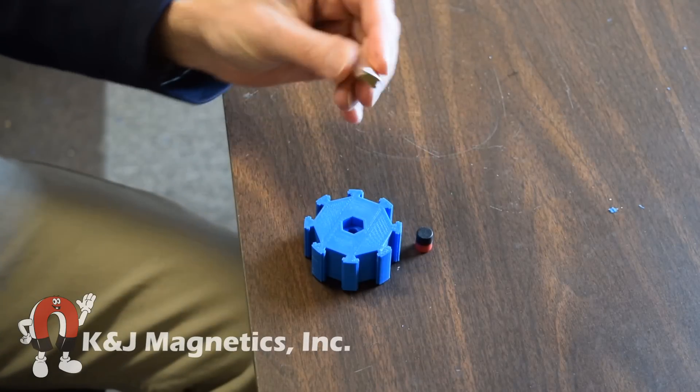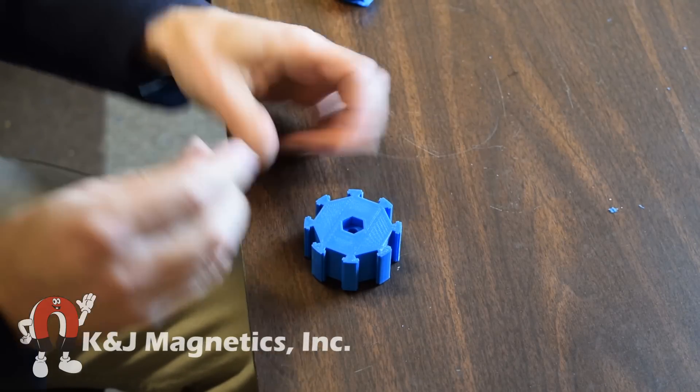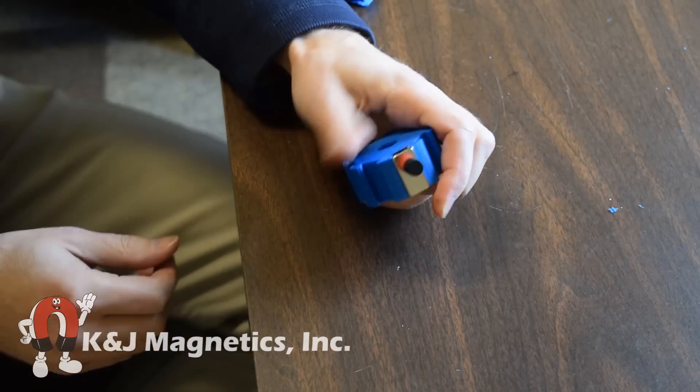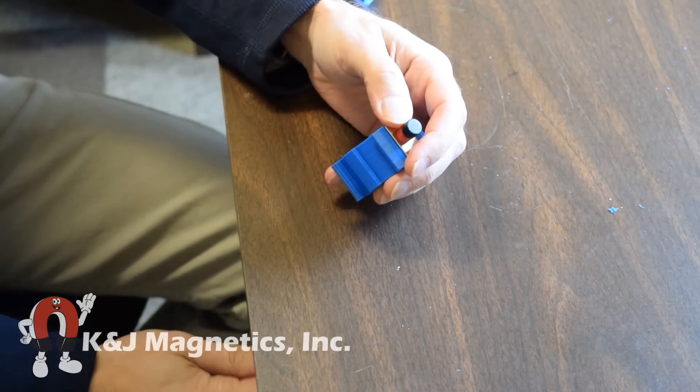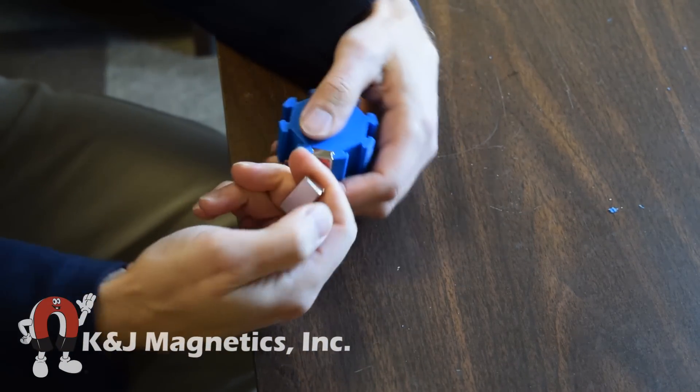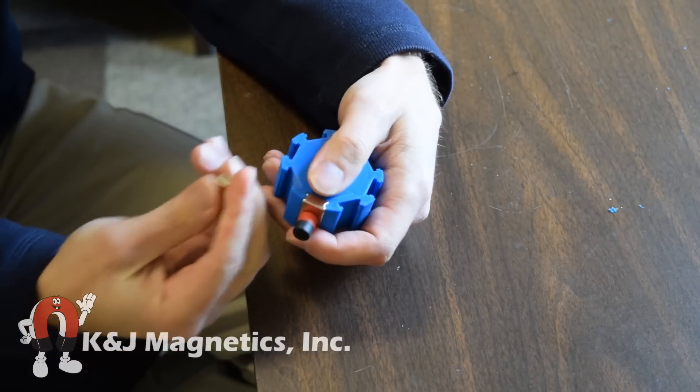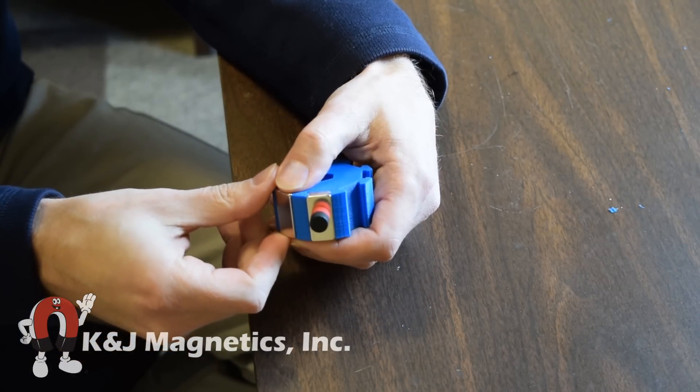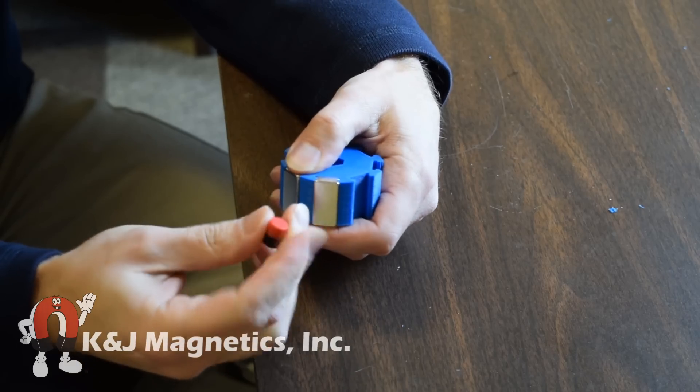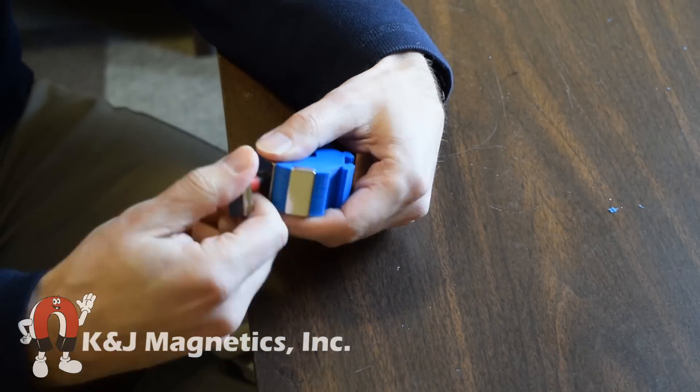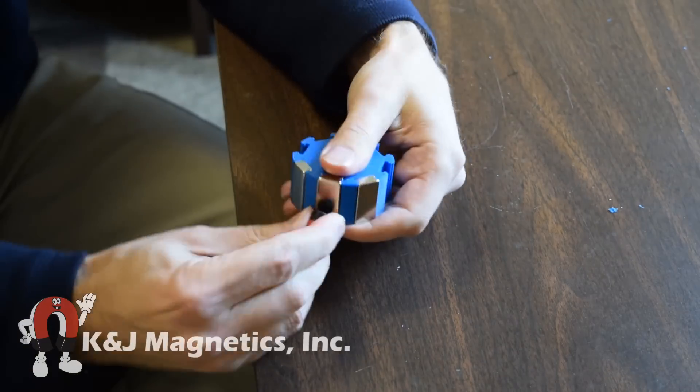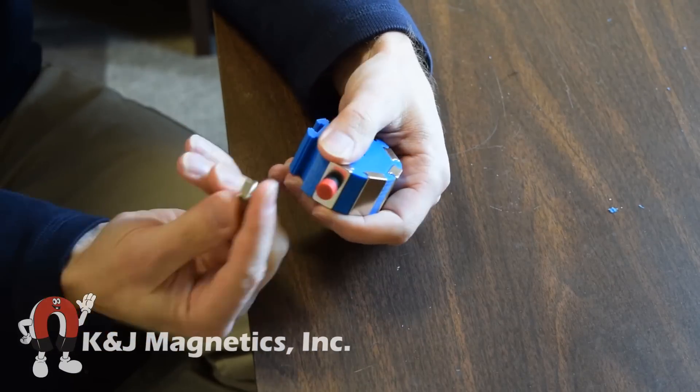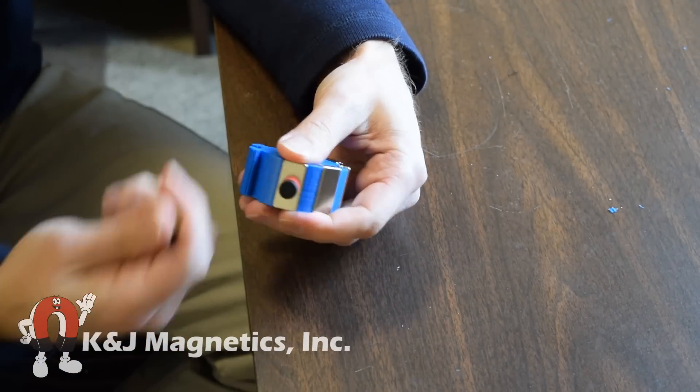The rotor, or the rotating part of the motor, uses eight block magnets. We used one of our step block magnets because it has a nice little inset notch on the side which made it easy to attach it into this 3D printed part. We assembled them so that the poles facing outward alternated. So if one magnet has the north pole facing out, the next one has the south pole facing out. This continued for all eight magnets.